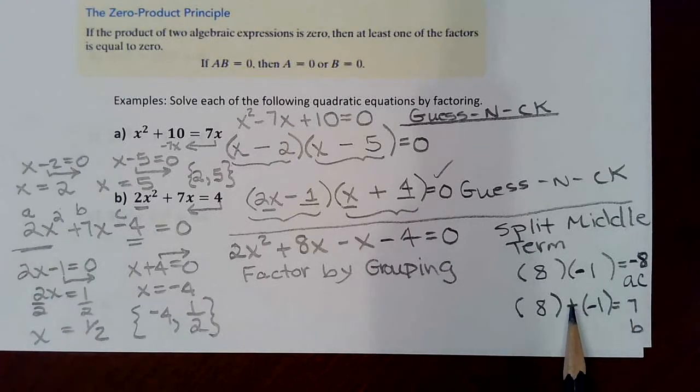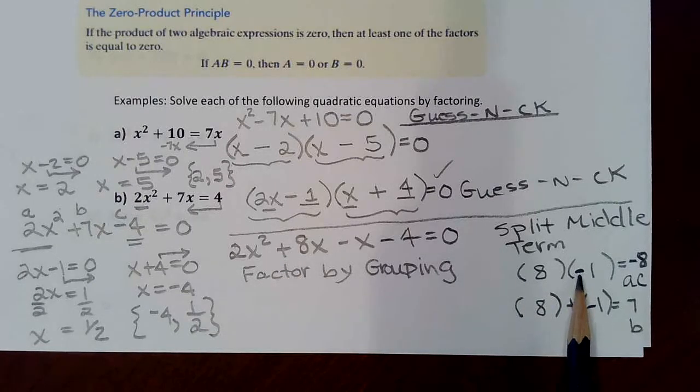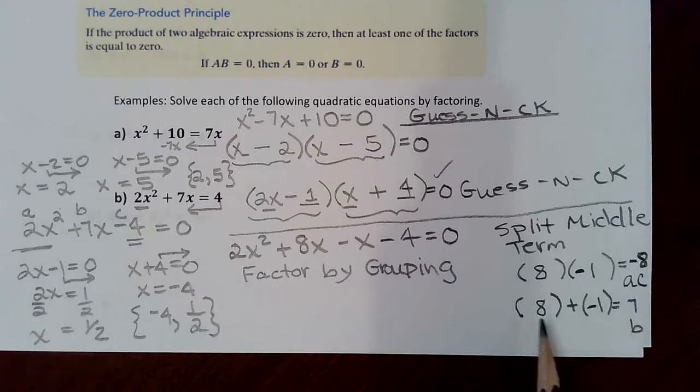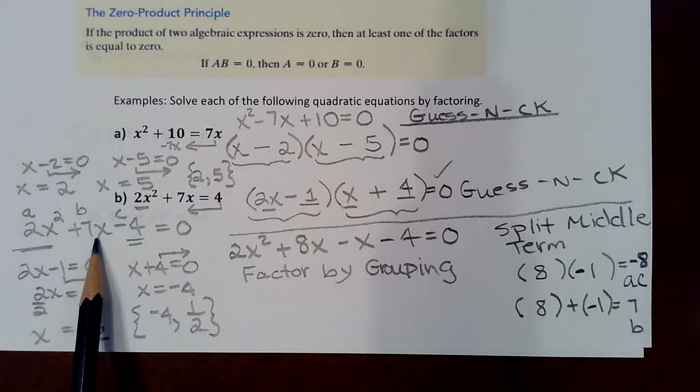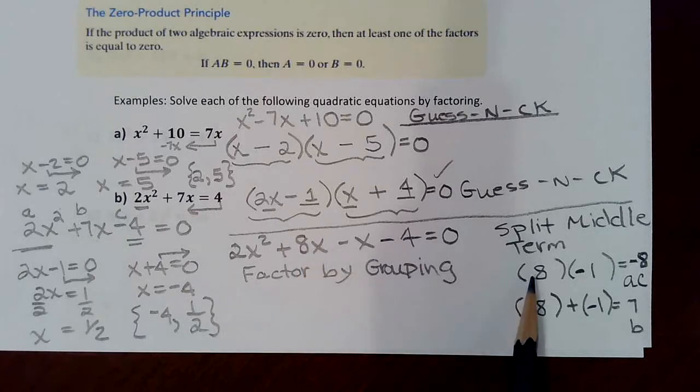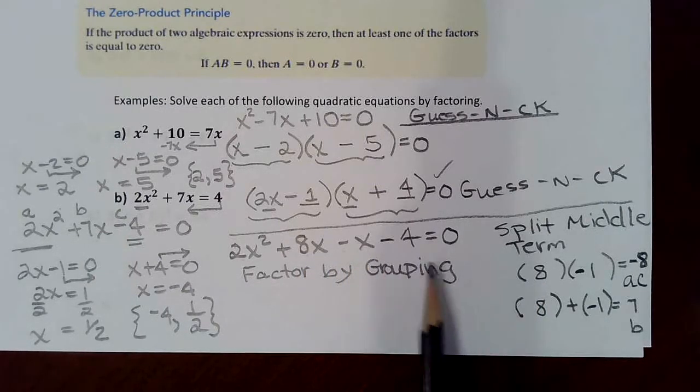So we had gotten into this method called splitting the middle term, and we had gotten to this part where we found two numbers that multiply to give the A times C value, but yet added to give us the B value. And we had used these two numbers to rewrite this middle term. Instead of a 7x appearing, we now have rewritten that 7x as 8x, which we got from here, minus 1x. We got the minus 1 from here. We just put x's on those terms.